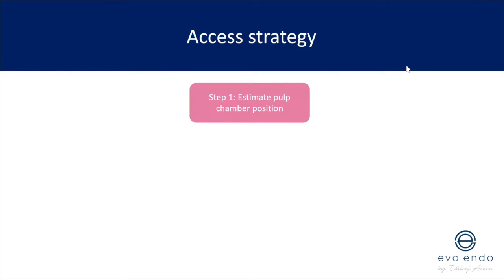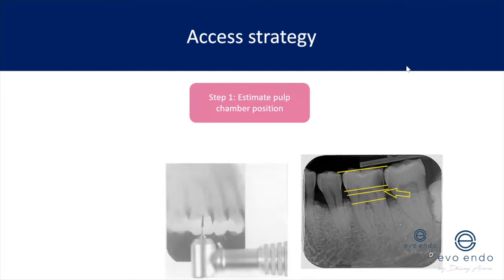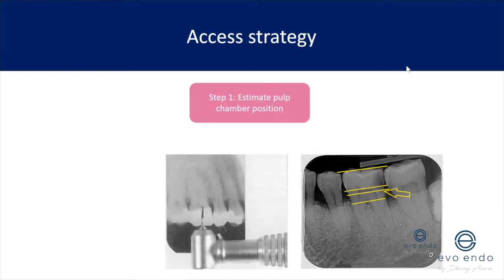Access strategy: always estimate the position of the pulp chamber. Take your coronal reference point and know where the roof of your pulp chamber is, where the floor is, and where the furcation is. You'll know how far you can drill with comfort and ease. Never go deeper than the floor of the pulp chamber, because it will make locating canals more challenging. The closer the roof and floor are in depth, the more challenging the endo — and if there are calcifications, even more difficult.